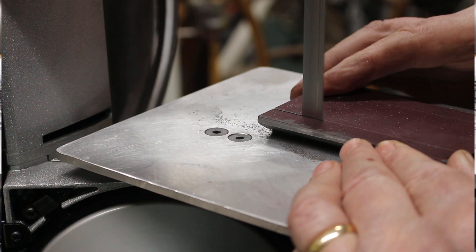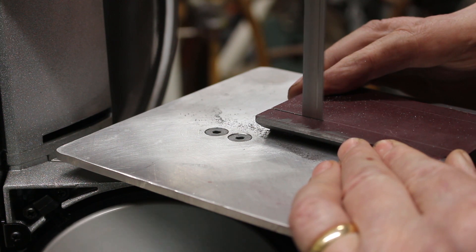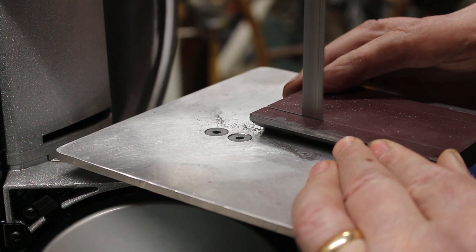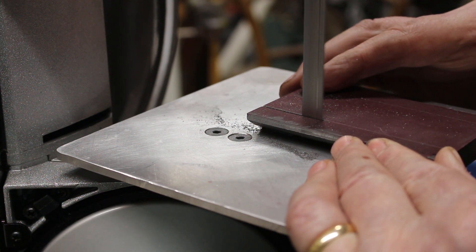Trimming off the excess material on the bandsaw. Off camera I'll put this back in the shaping machine to machine the sides parallel to width.